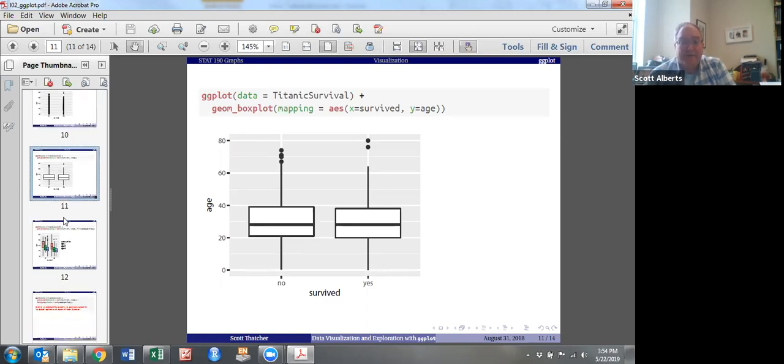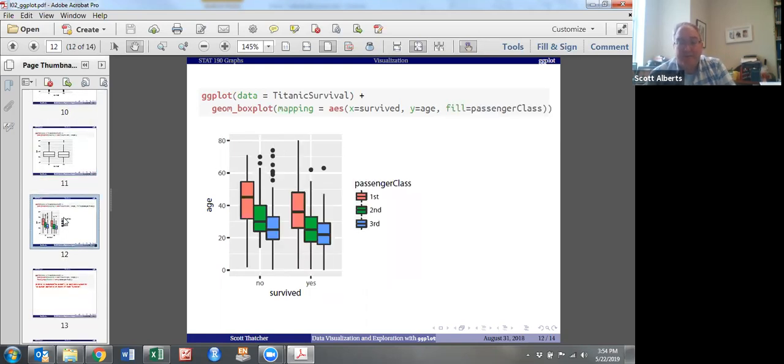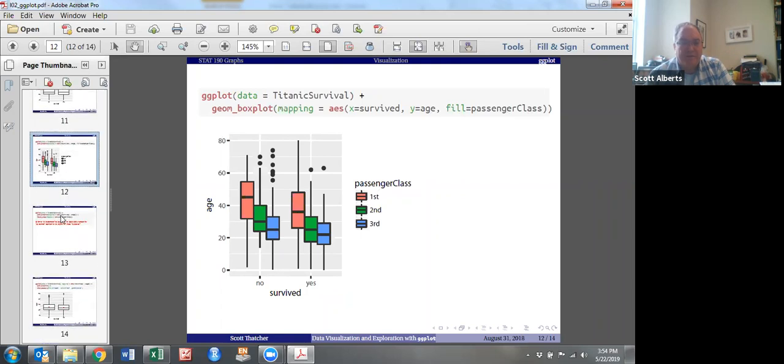We can start to add more functions to make fancier box plots. So we do fill equals passenger class, so the first, second, and third class. And you can see how those variables go on from there.